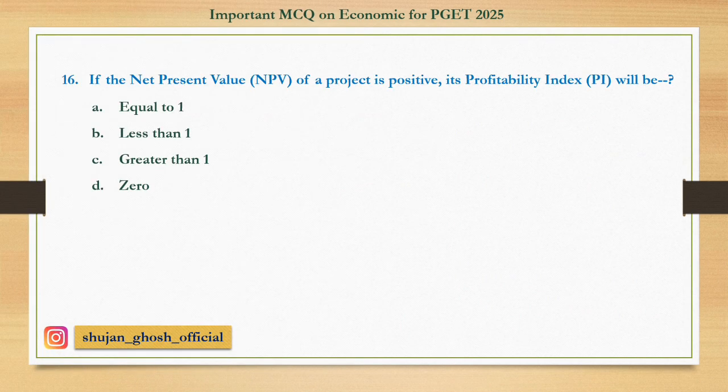Question number sixteen: If the NPV of a project is positive, its profitability index will be — option A: equal to zero. B: less than one. C: equal to one. D: greater than one. Answer: greater than one.